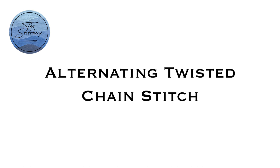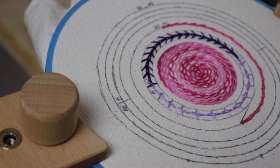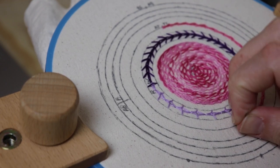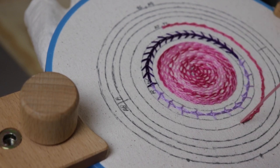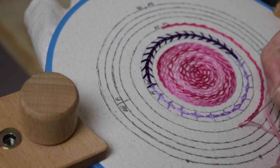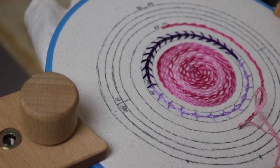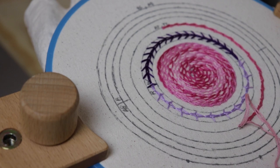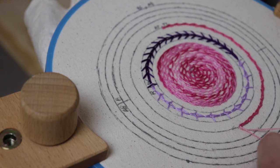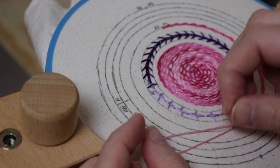Now for twisted chain stitch we were coming up on the same side of the line through the whole thing, so that little twisted foot was always on the same side. We're now going to do alternating twisted chain stitch because yeah, I'm considering that a different stitch. And for this it's the exact same thing, but you're going to switch off which side of the line you come up on. So first you can come up on the outside of the line, just a few millimeters away.